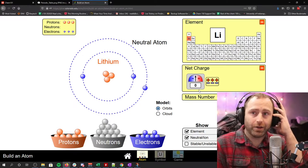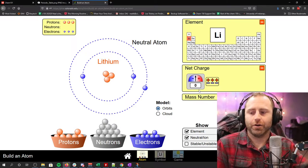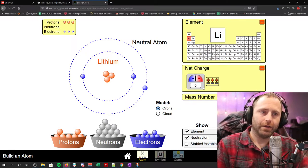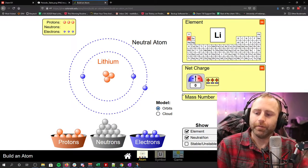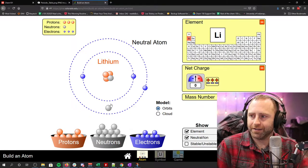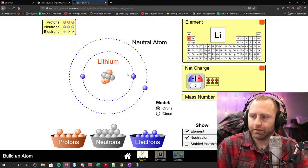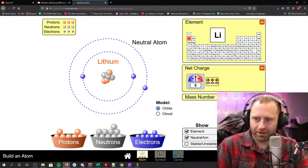If you're going to have an element, you have to have a neutral charge. Now, I forget exactly how many, but we're going to just put the neutrons in there.